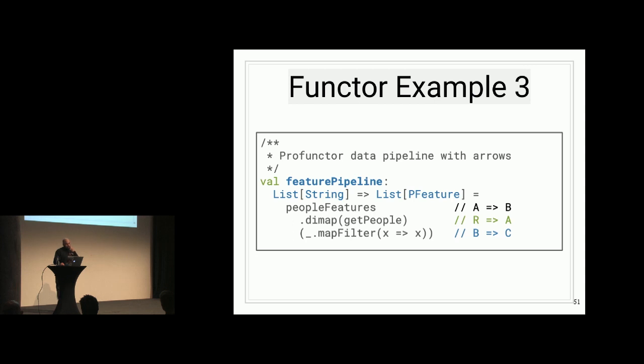So the third example kind of leverages this bit of information. We're using what's called dimap, which is defined on the profunctor in cats. So I have my original get people function that takes a list of strings and returns a list of people. I'm essentially doing a contra map of get people on the people features arrow and then I'm doing an additional covariant mapping of map filter which just collapses all the options underneath the list. So you have this A to B, R to A, B to C type of composition. That's all done in a single line using the profunctor.